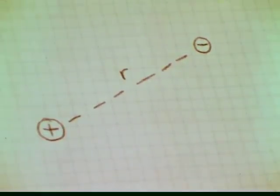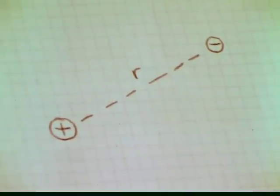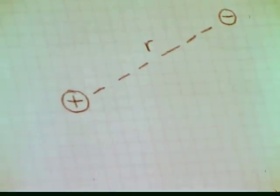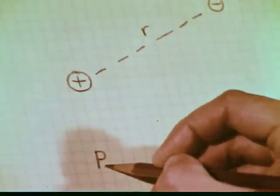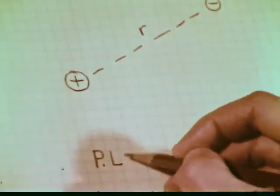The electron and the nucleus have opposite electric charges, so they attract each other. This attraction gives the atom a certain amount of potential energy. The amount depends on the distance, r.